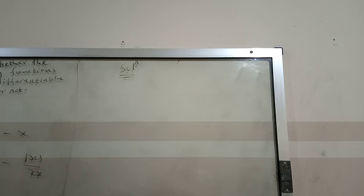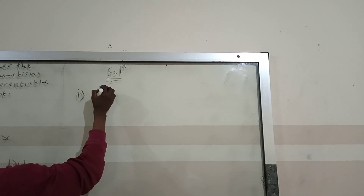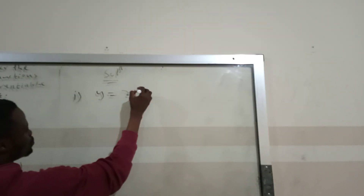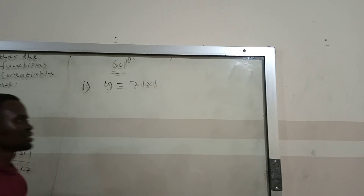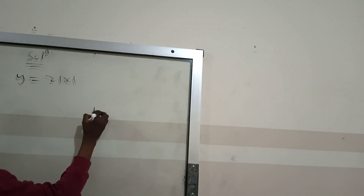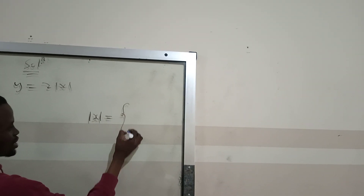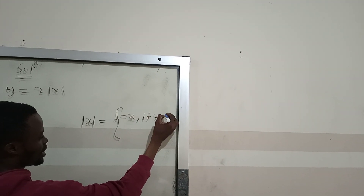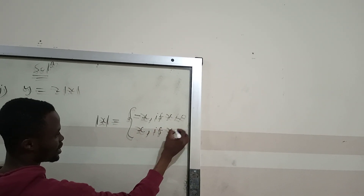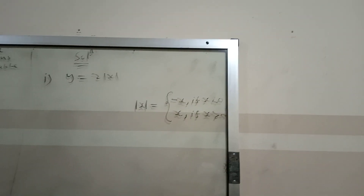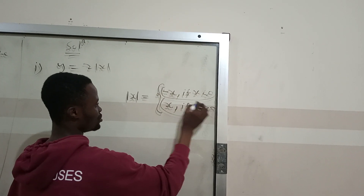For function i), y equals 2 times the absolute value of x. We have to change this absolute sign into a piecewise function. So the absolute value of x equals negative x if x is less than zero, and positive x if x is greater than zero. The left hand side corresponds to x less than zero and the right hand side corresponds to x greater than zero.